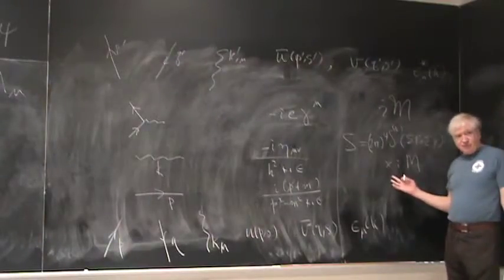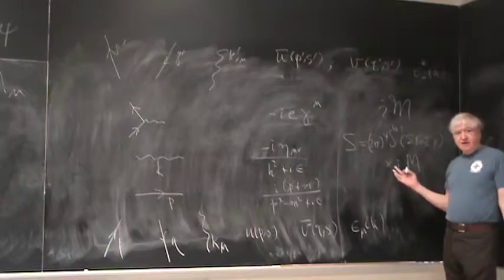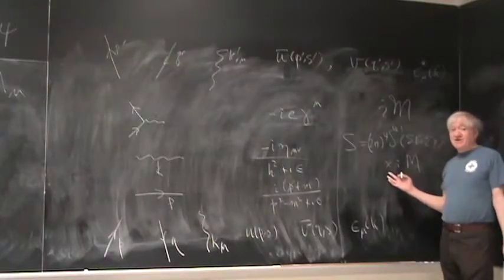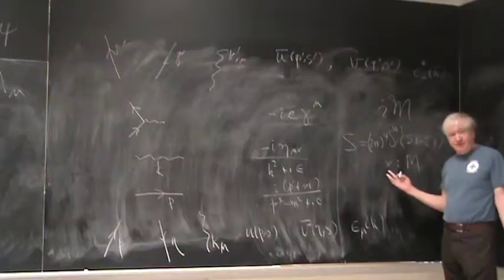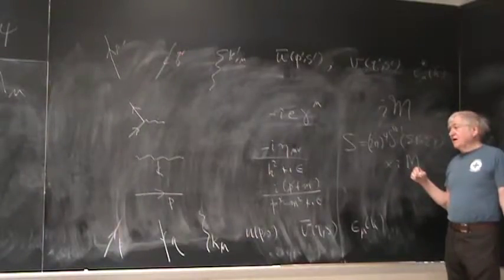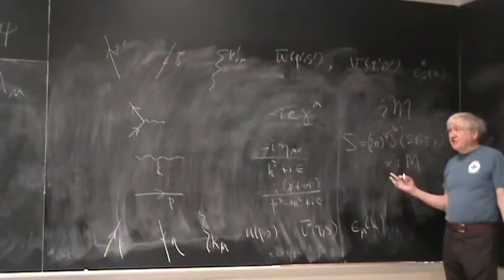These quantities give us something called iM. And the actual S matrix element is (2π)^4 δ^4 of all the outgoing minus the incoming 4-momenta times iM. There are more Feynman rules though that are really just sort of caveats.